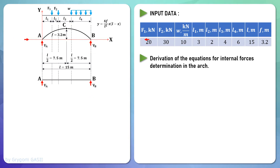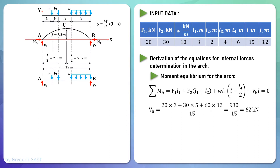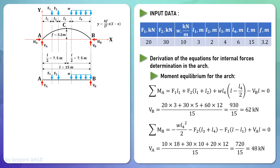Draw a beam with the same span as the arch and load it with the same vertical load. Now write the bending moment equilibrium equation about point A. From this equation, the vertical support reaction in the right support B can be determined. The support reaction in the right support B is 62 kilonewtons. Next, write the bending moment equilibrium equation about point B for determination of the support reaction in the left support A. The support reaction in the left support A is 48 kilonewtons.